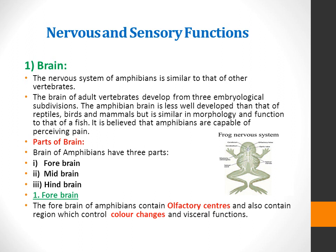The forebrain of amphibians contains olfactory centers and also contains regions which control color changes and visceral functions. The olfactory center assumes greatly increased importance on land for detecting dilute airborne odors. The sense of smell is one of the dominant special senses in frogs. The remainder of the forebrain or cerebrum has little importance in amphibians.